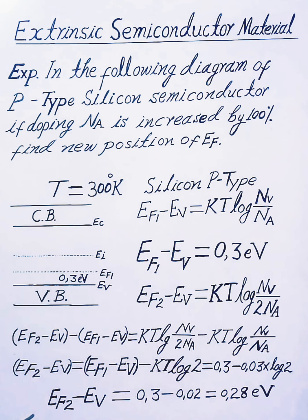Now, Fermi level EF2 minus EV equals 0.3 electron volts minus 0.02 electron volts, equal to 0.28 electron volts. The new position of Fermi level is 0.28 electron volts above the valence band.